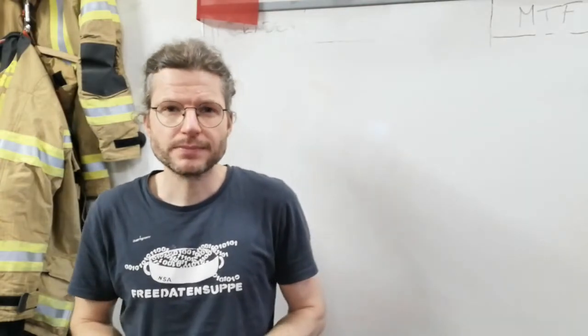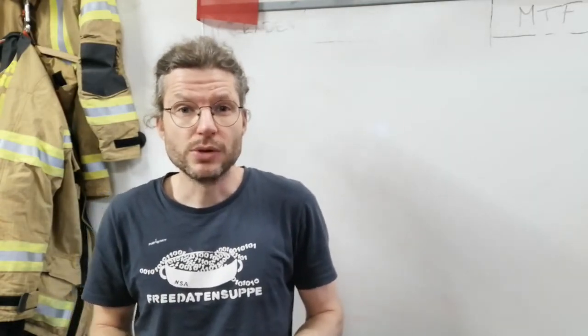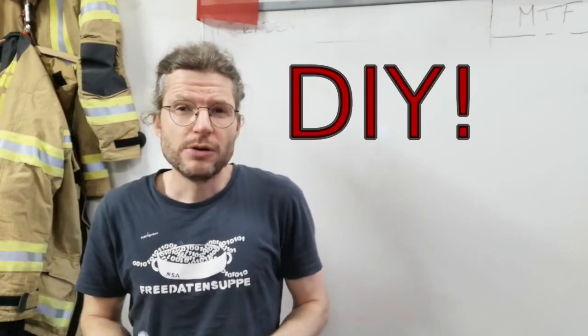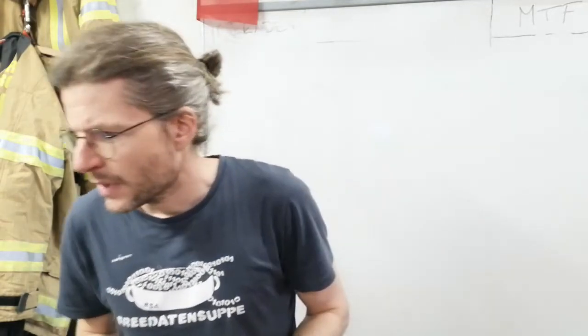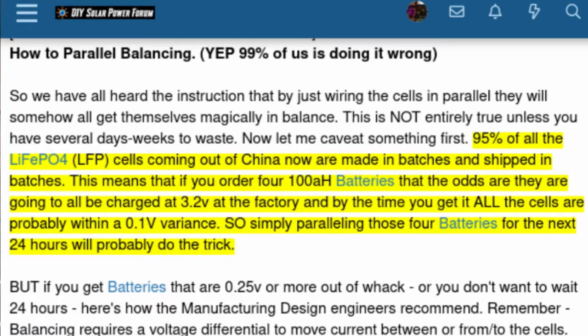I googled the whole thing and found a really nice entry in the DIY solar forum. It said that 95% of all the cells coming out of China are produced in batches and shipped in batches. If they are matched and equally charged, the only thing you need to do is put them in parallel, wait 24 hours, and usually everything is fine. So passive balancing.